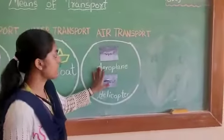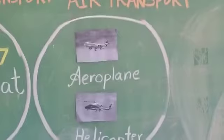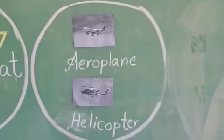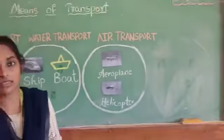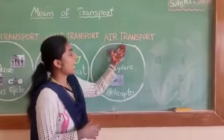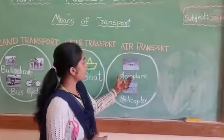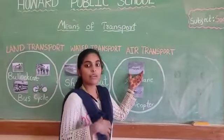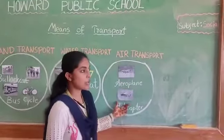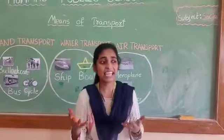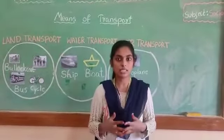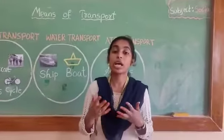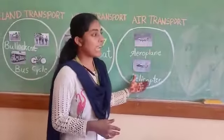Next is air transport. If you want to go a very far distance in a very short time — for example, in an emergency — we use air transport. In air transport, we have aeroplanes and helicopters. Aeroplanes are used to travel very long distances. Helicopters are used for emergencies, for example if there are any natural disasters — helicopters are used to rescue and help the people. This is called air transport.